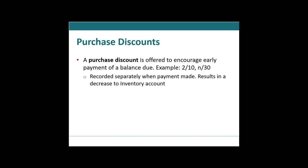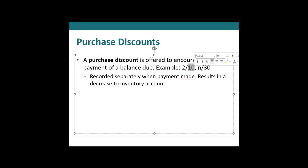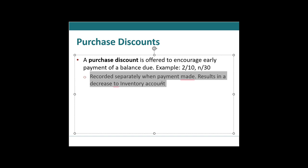What about purchase discounts? A purchase discount is offered to encourage early payment. For example, terms of 2/10 net 30 mean you get a 2% discount if you pay within 10 days, but the entire invoice is due in 30 days. They're literally giving you a discount to pay 20 days earlier than required. When this happens, it is recorded separately from the initial purchase entry and results in a decrease to the inventory account.